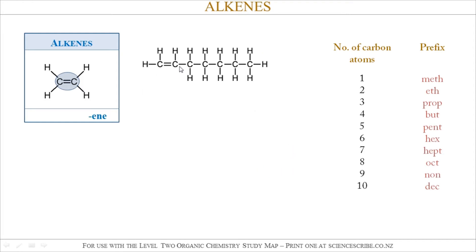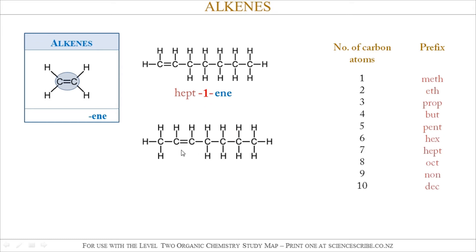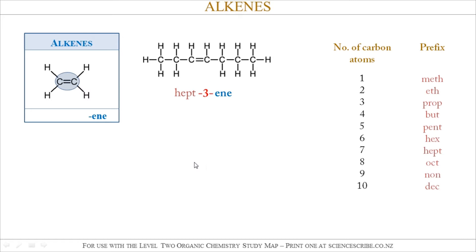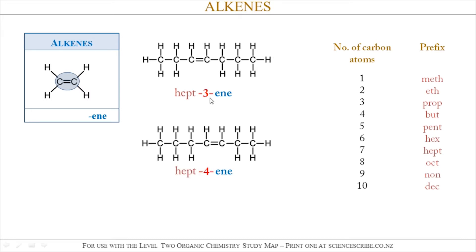As another example, I have 7 carbon atoms going from left to right — that makes it 'hept'. It's an alkene, so it ends with '-en', but the double bond is at position 1 and I have to specify that, so it's hept-1-en. If the double bond was shifted across to the second position, it would be hept-2-en. If we shifted it across to the third position, it would be hept-3-en.